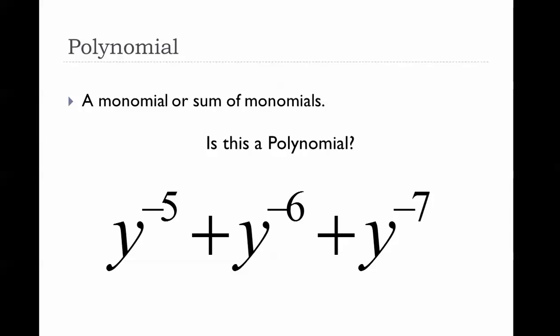Is this a polynomial? Hopefully you said no. This is not a polynomial because none of these terms are monomials — they all have negative exponents, which are not whole number exponents. So y to the negative fifth is not a monomial, and therefore this is not a sum of monomials, so the whole thing cannot be a polynomial.